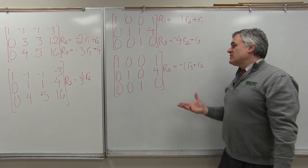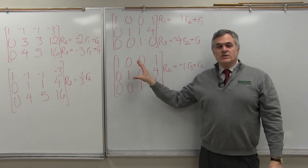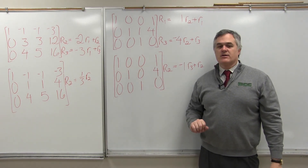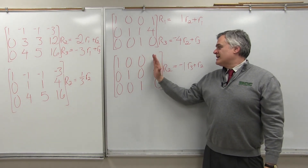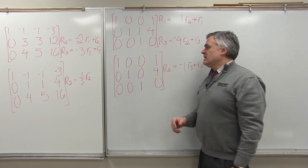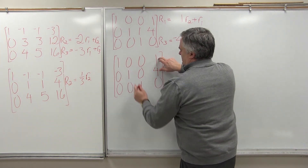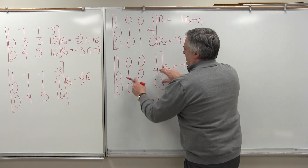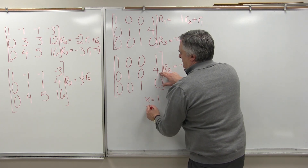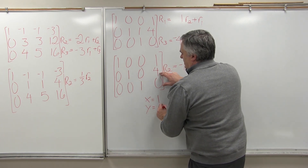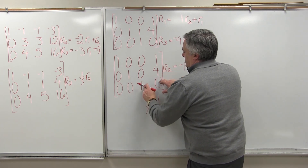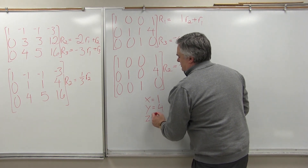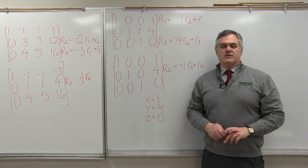This matrix has been solved. It's got all the zeros and ones where they belong, with ones going along the diagonal. The last column shows the solution: the top row says x is 1, the middle row says y is 4, and the bottom row says z is 0. Done.